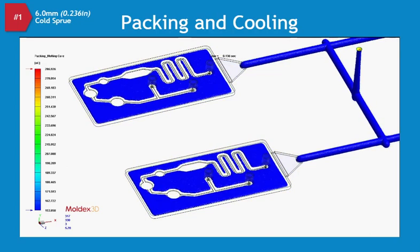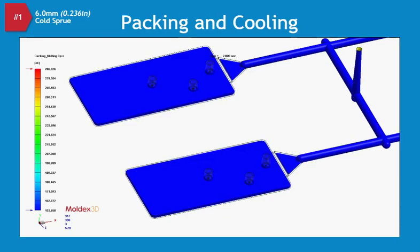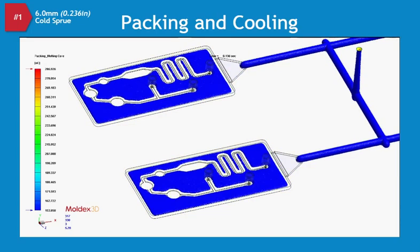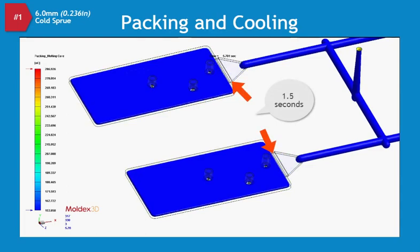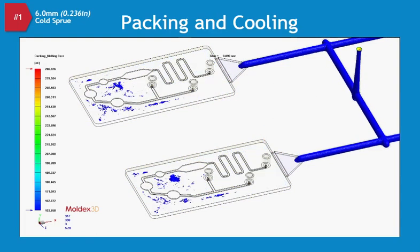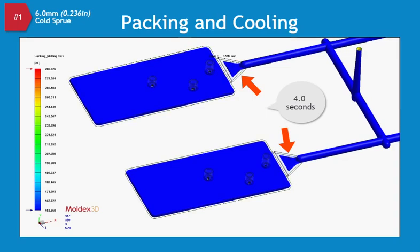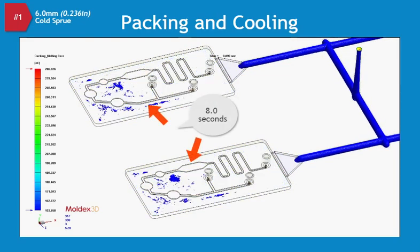When the blue areas turn clear, the material is frozen. Based on this animation, the gate is freezing first at about 1.5 seconds into the packing phase. The next area to freeze is the fan gate at about 4 seconds and then the thinner wall sections at 8 seconds.